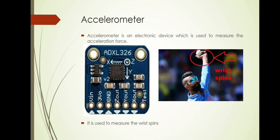This is an accelerometer. An accelerometer is an electronic device which is used to measure the movement. It has three modes: X, Y and Z. The sensor is only capable of running in one of these three modes at a time, and it is used to measure the wrist spins.